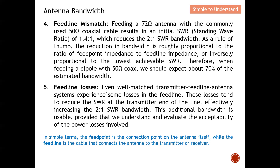Regarding feed line loss: even a well-matched transmitter–feed line–antenna system, such as 50 ohm matched to 50 ohm, still experiences some form of loss in the feed line. Even with a good conductor, there will be some loss. This loss tends to reduce the SWR at the transmitter end of the line, effectively increasing the 2-to-1 SWR bandwidth — which means the bandwidth actually becomes broader. This additional bandwidth is usable, provided we understand and can evaluate the acceptable power loss involved.